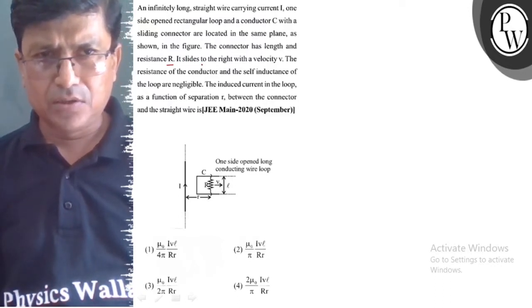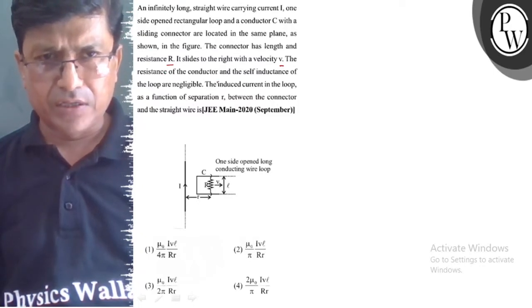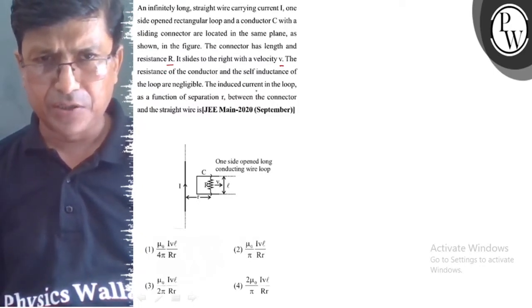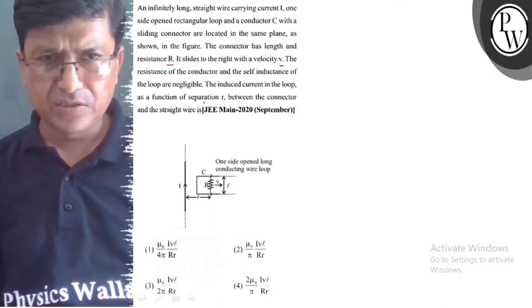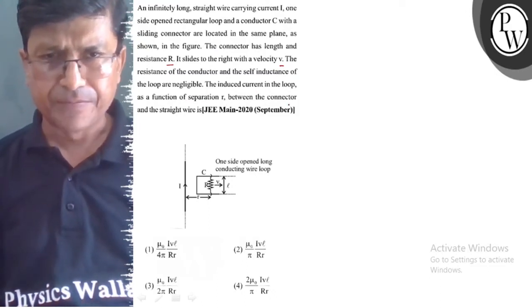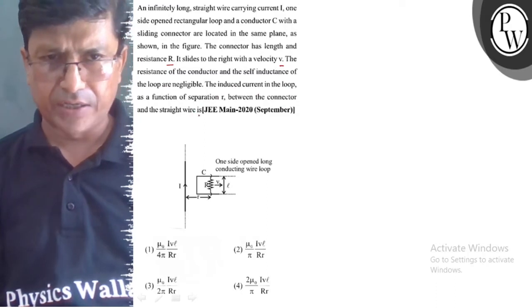It slides to the right with velocity V. The resistance of the conductor and the self-inductance of the loop are negligible. The induced current in the loop as a function of separation R between the connector and the straight wire is: